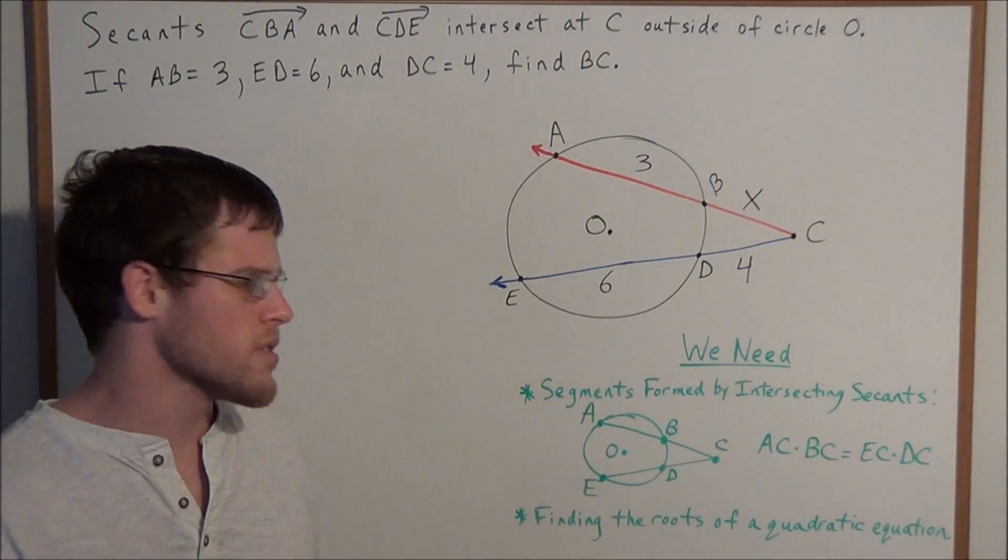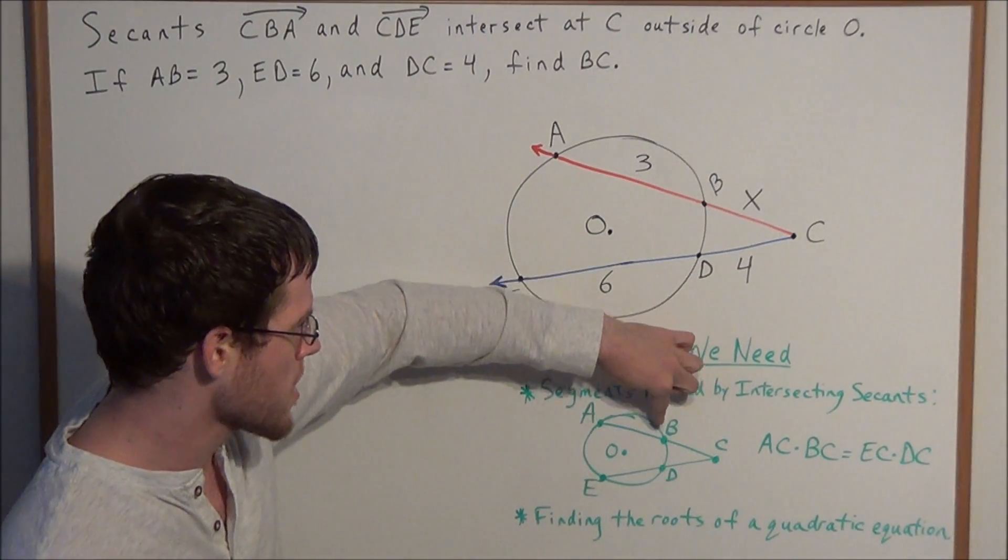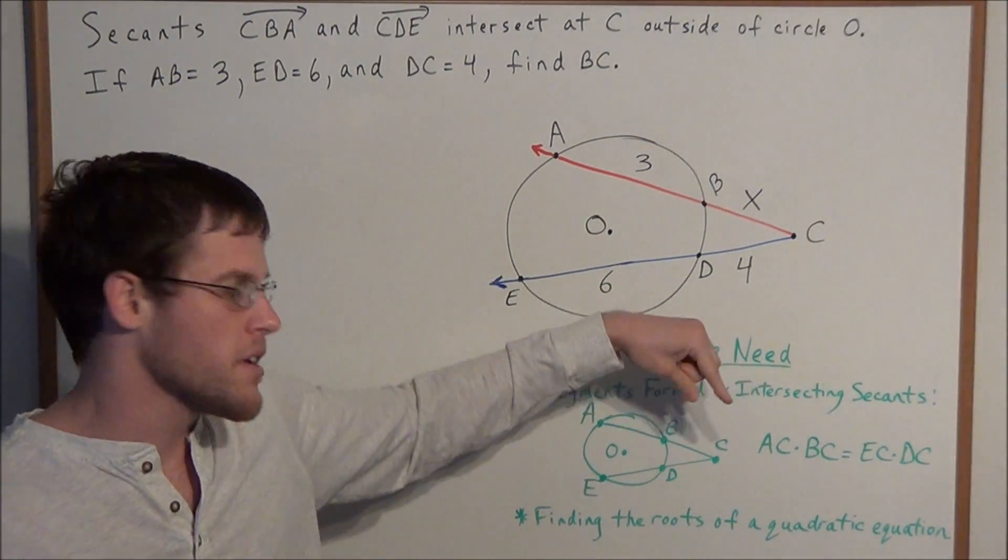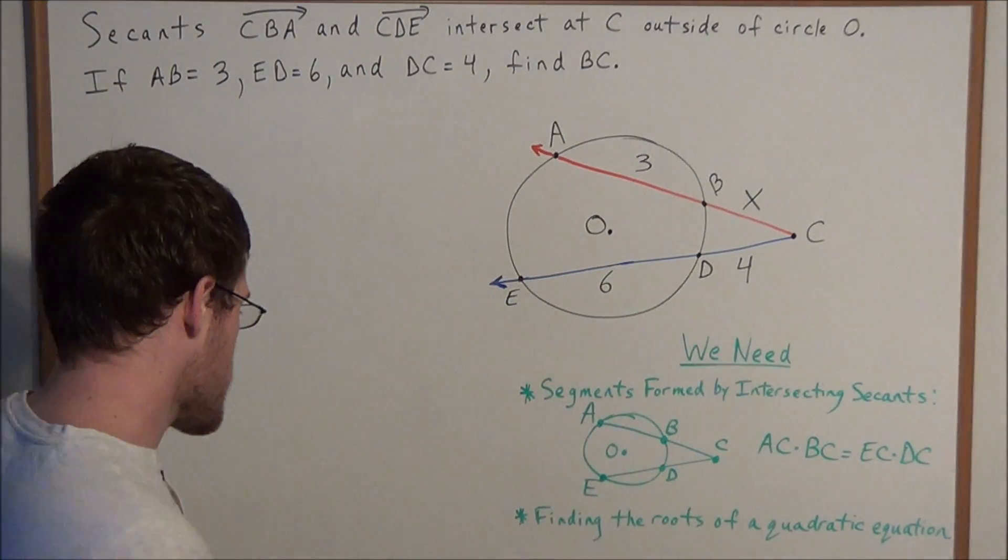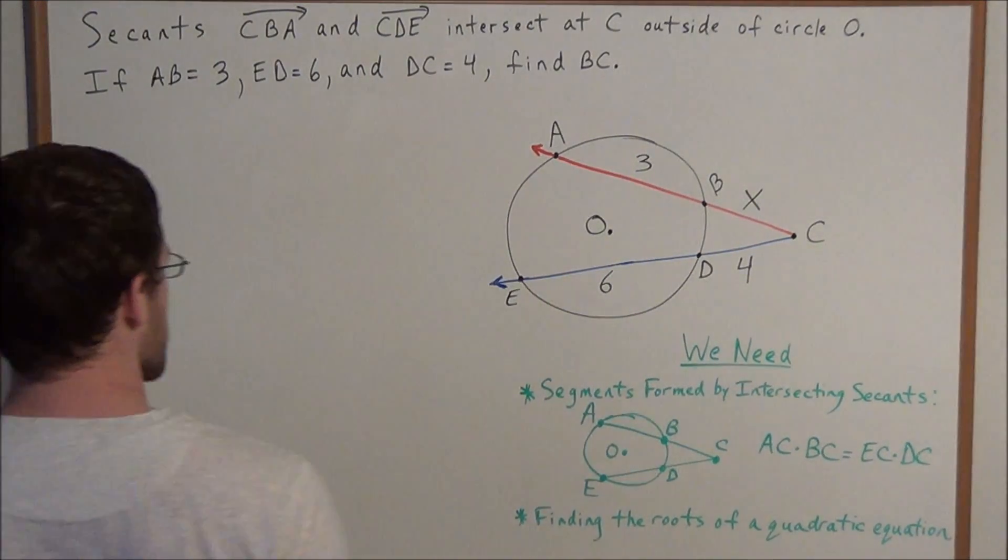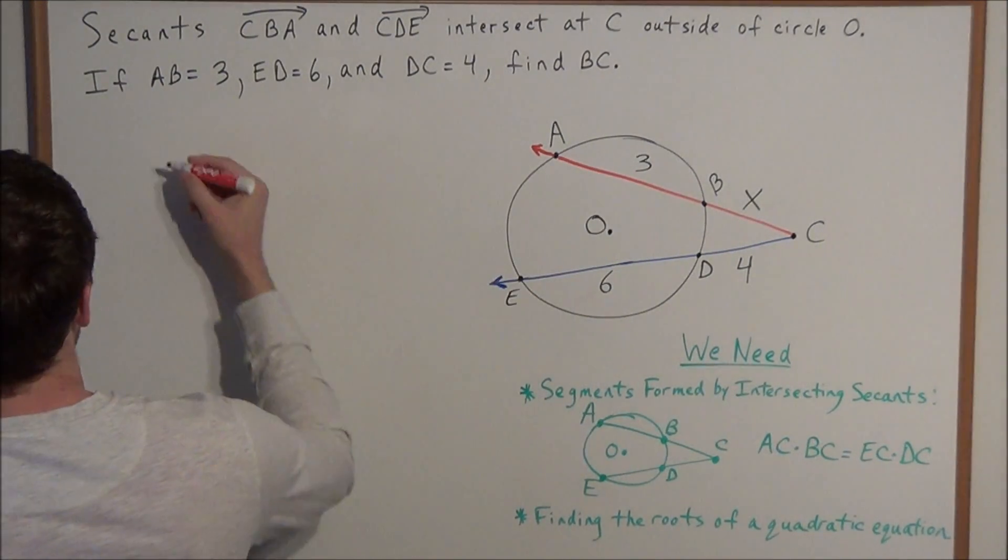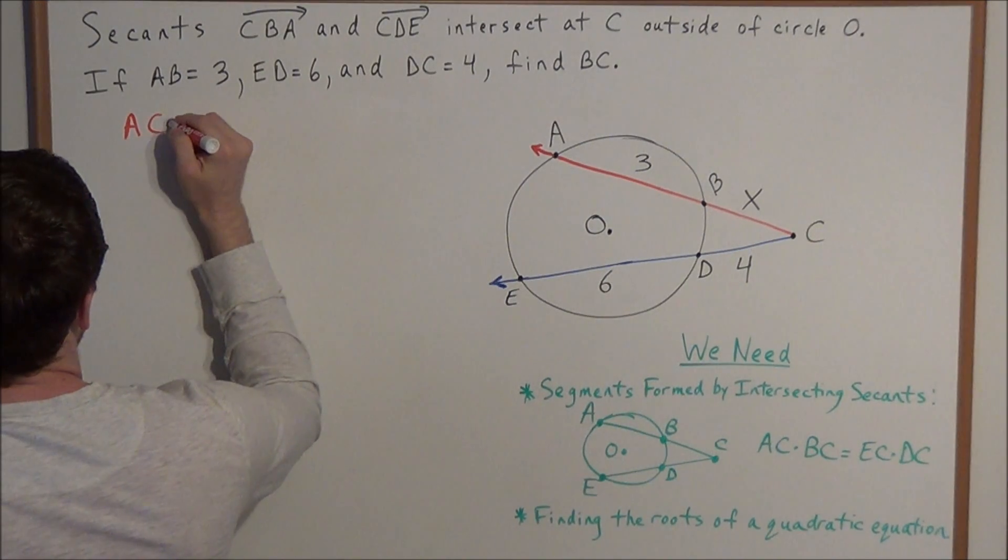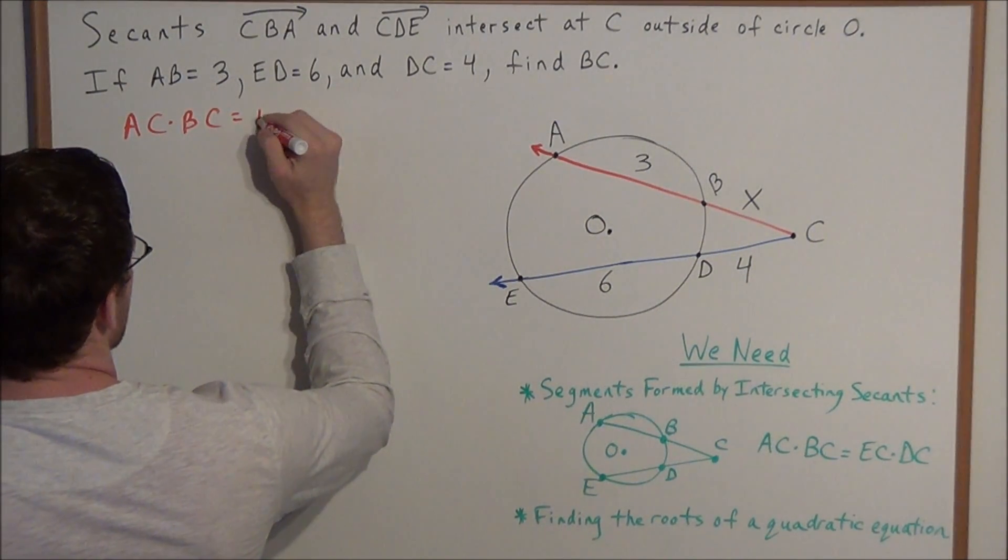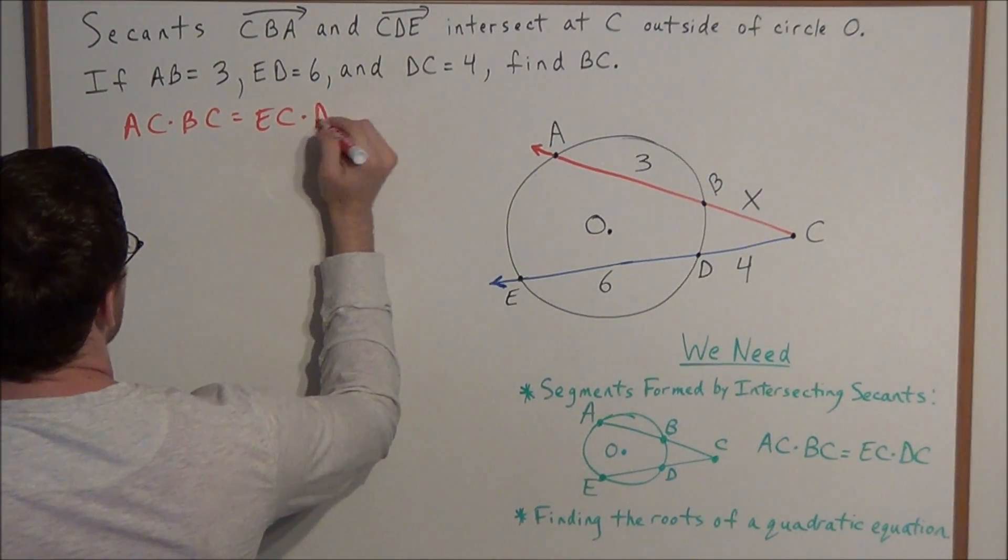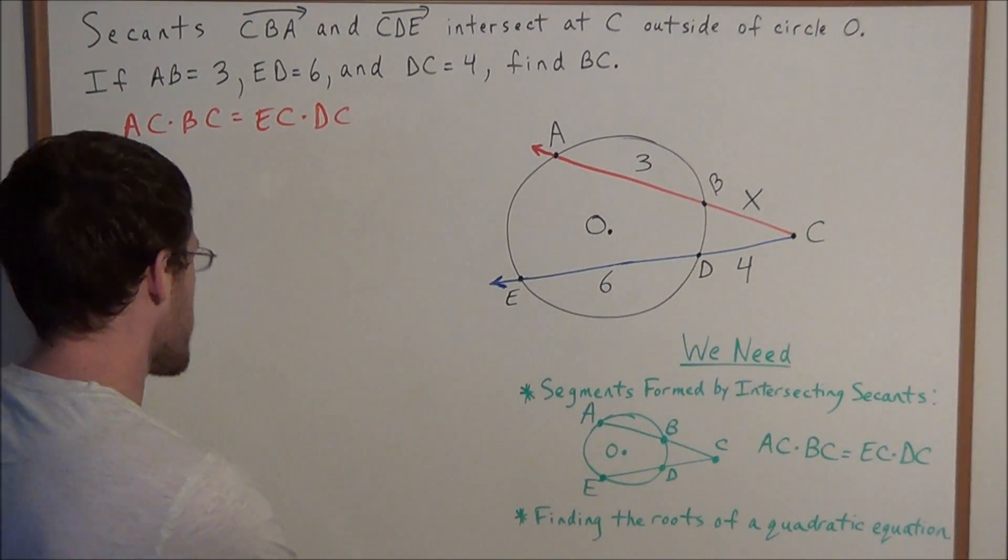In other words, the length of the entire secant segment AC times the outer segment BC equals the length of the entire secant segment EC times the outer portion DC. So we set up this equation and substitute with the values that we have. Now what we need to do is substitute for all the values that we can.